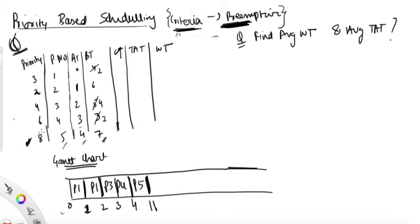One important thing: higher the number, higher the priority — it will be mentioned in the question. And P5 has the highest priority. I forgot to mention it earlier, I am sorry for that. This is highest priority.